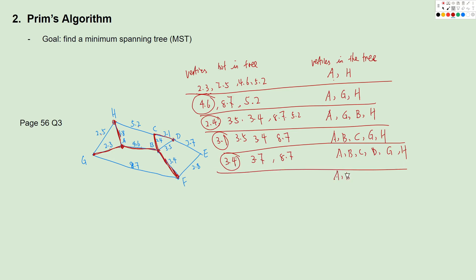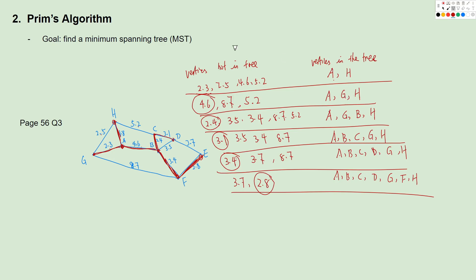Now we have A, B, C, D, F, G, H in the tree. Only E is not connected. E can connect to D at 3.7 or to F at 2.8. We choose the smaller one, which is 2.8. Now all vertices have been connected, so the minimum spanning tree is complete. The difference between Prim's and Kruskal's algorithm is that with Prim's we don't sort the edges — instead we keep adding vertices to the tree and look at edges from those vertices to vertices not yet in the tree.